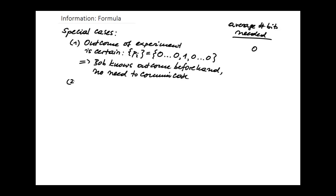Let's look at another special case: a random experiment with two possible outcomes where both have the same probability, one half — that's the case when you flip a fair coin, heads or tails, both equally likely. How many bits do you need to communicate the result of a coin flip? You need exactly one. You use zero for heads and one for tails or vice versa — you need one bit.